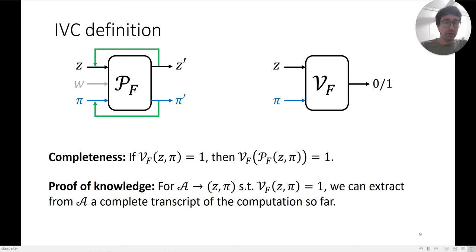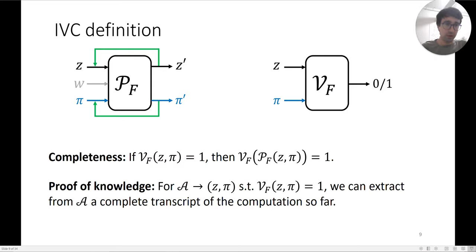For every adversary that produces a final state-proof pair which is accepted by the verifier, we can extract from that adversary a complete transcript of the computation, going all the way back to z0.